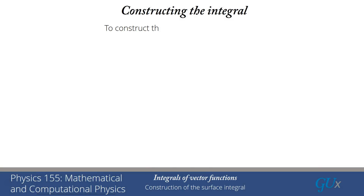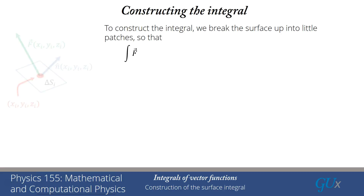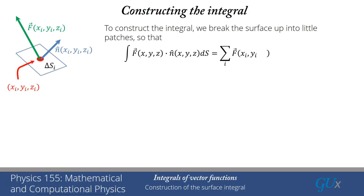To construct the integral, we break the surface into little patches, associate the normal vector with each patch, take the dot product of the normal vector with the vector field, and sum that over all patches. The red dot is the location (xi, yi, zi), the blue rectangle is the patch delta Si, the normal vector is n-hat shown as a blue arrow, and the vector field is f shown as the green arrow. I take the dot product of the blue and green arrows — that's a number — multiply it by delta Si, then sum over all patches.